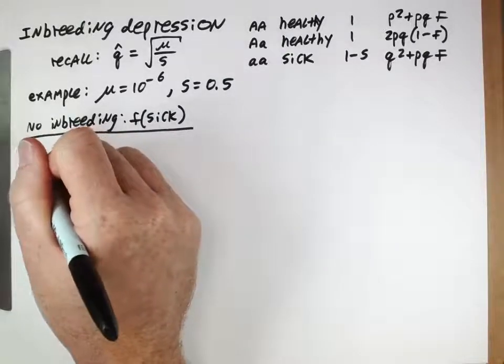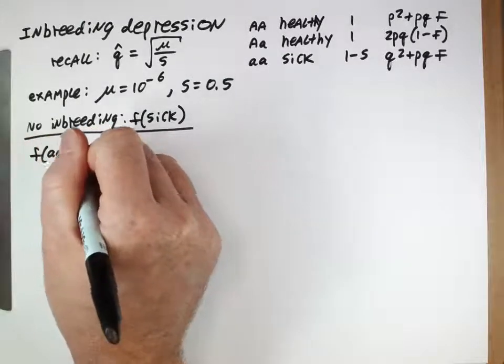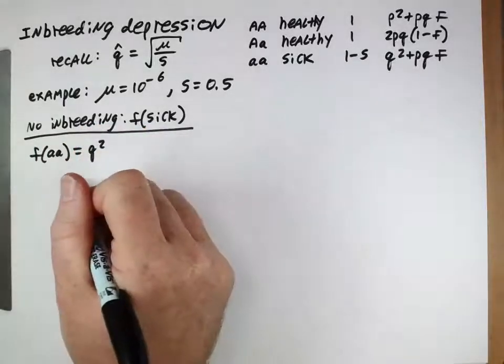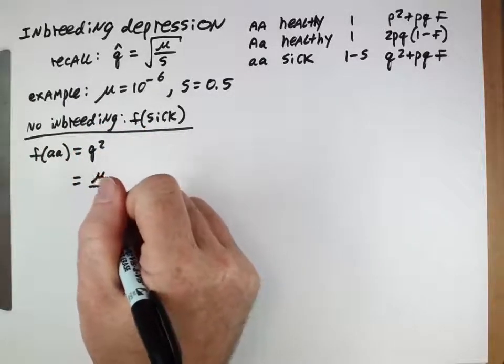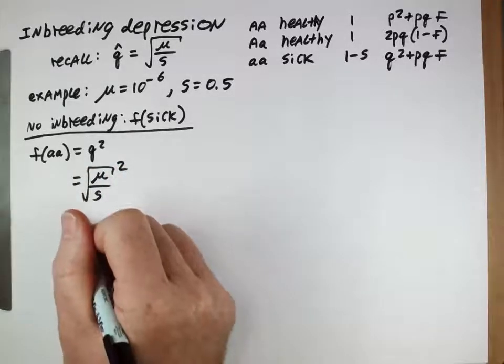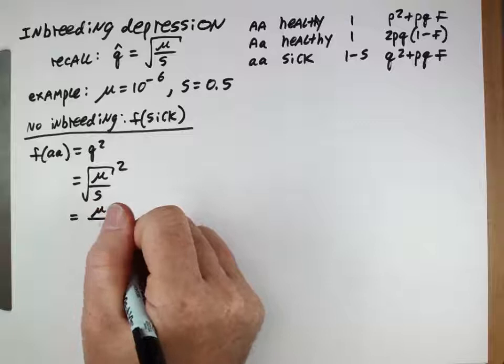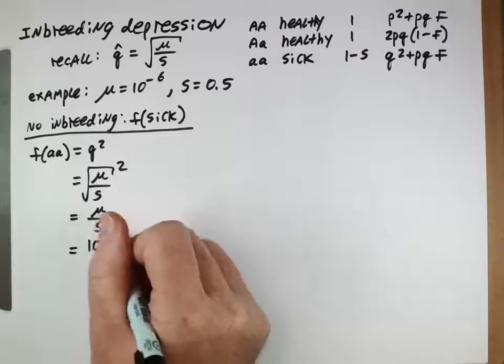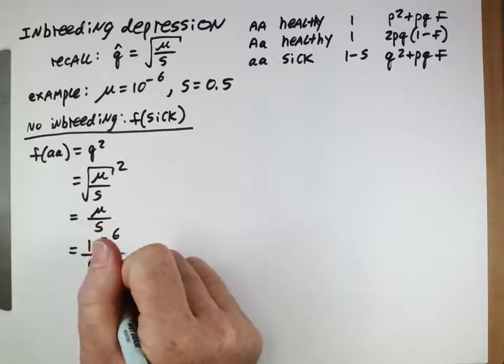The frequency of sick individuals if there's no inbreeding will just be frequency of this is q squared. We know that q is mu over s square root, and then we're squaring that, so that just gives us mu over s. This is 10 to the negative 6 over 0.5.